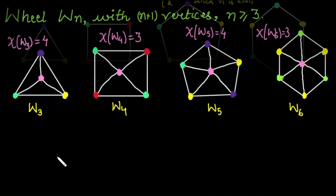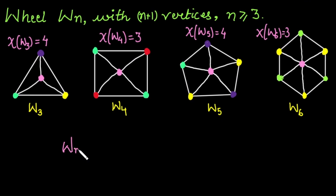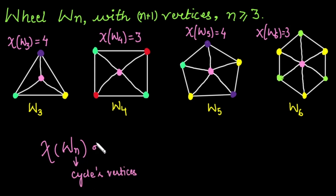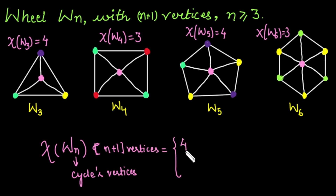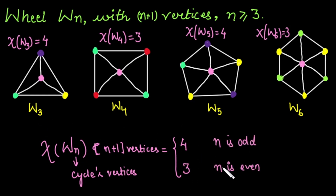In summary, the chromatic number of the wheel graph Wn (with n vertices in the cycle, or n+1 vertices total) is 4 when n is odd, and 3 when n is even.